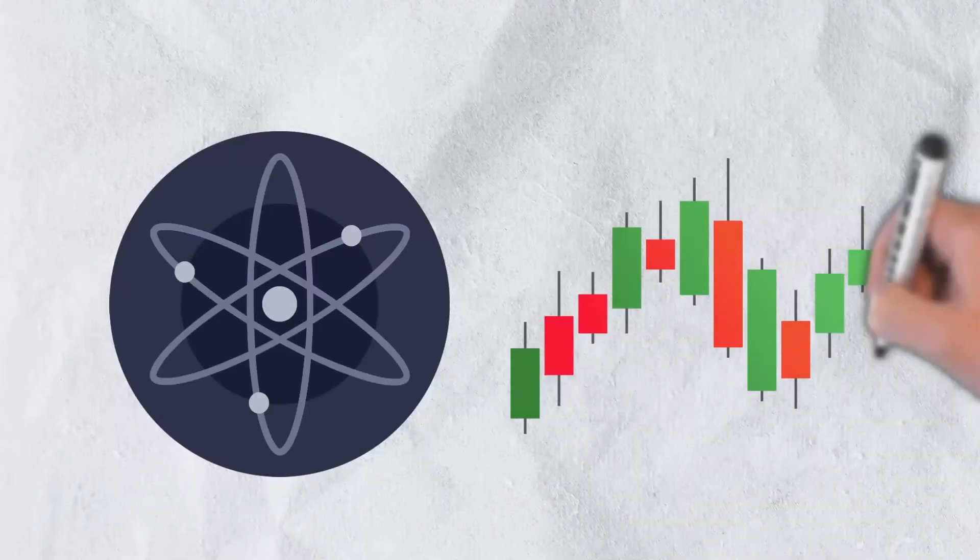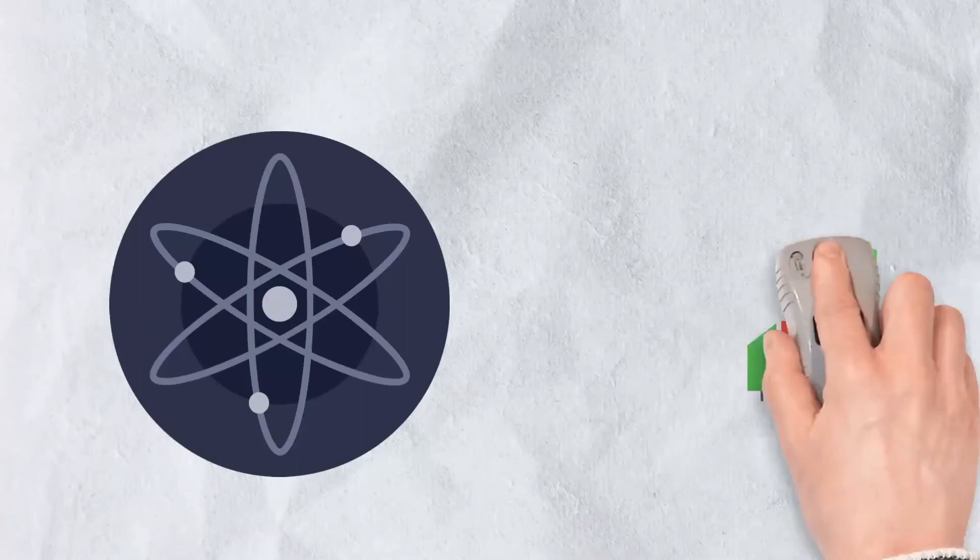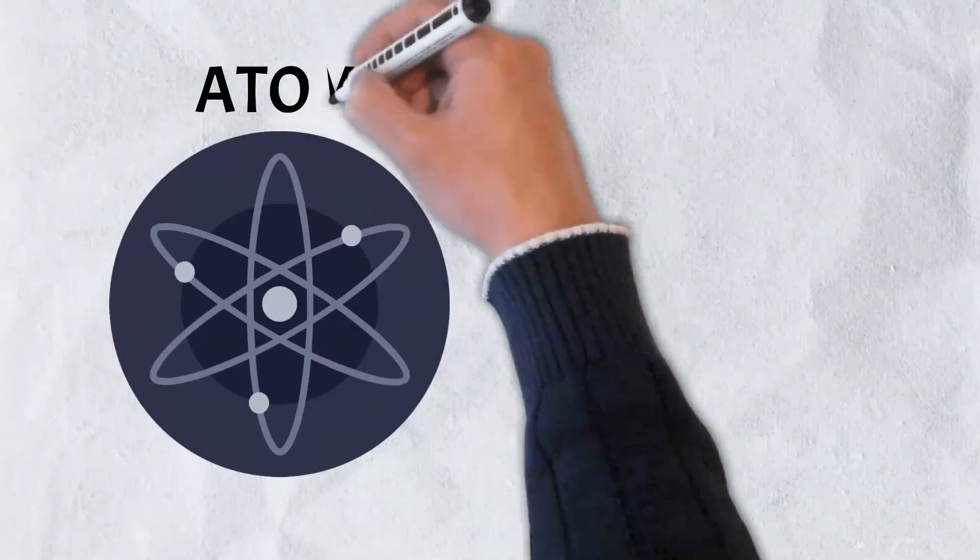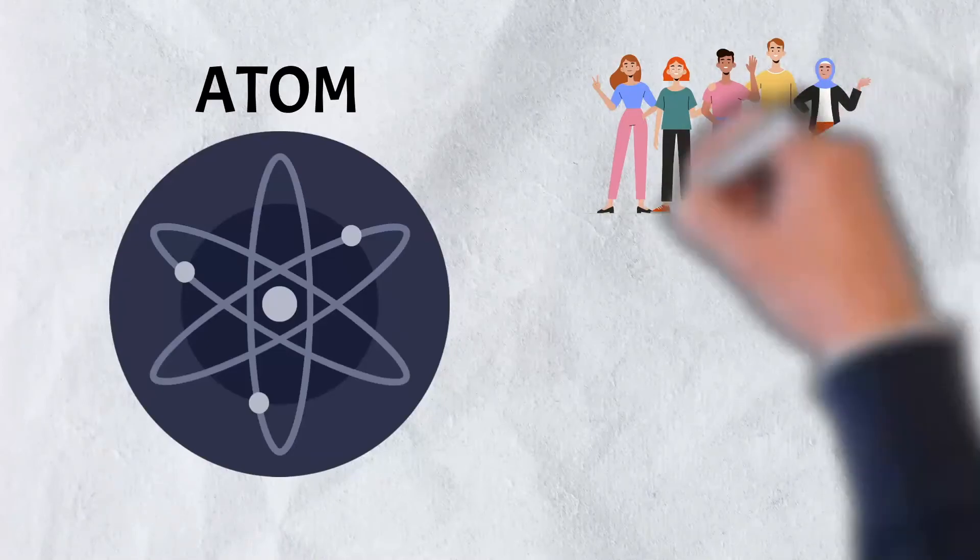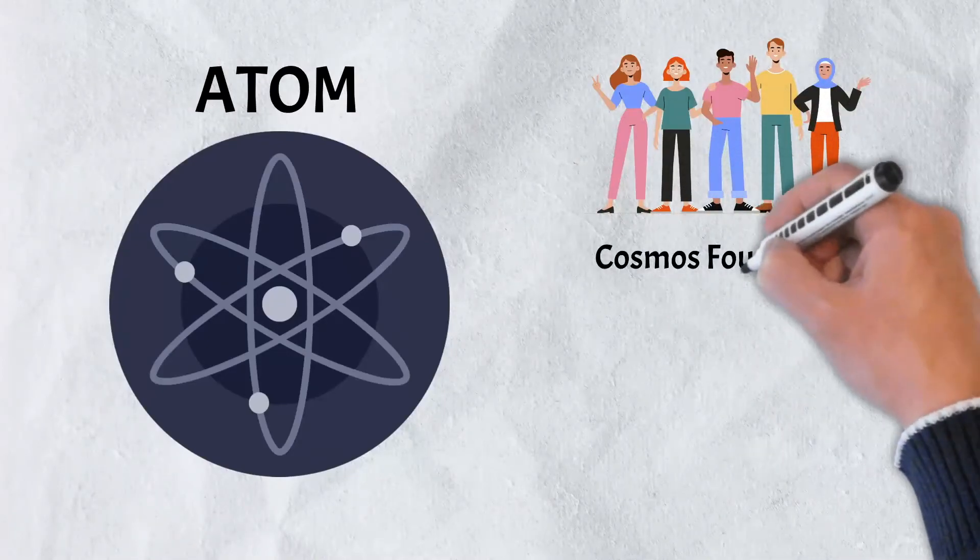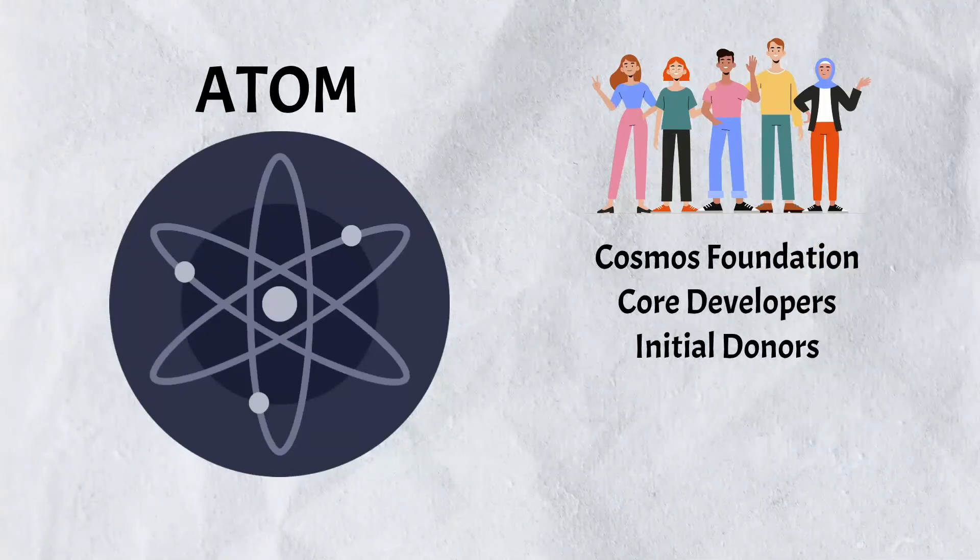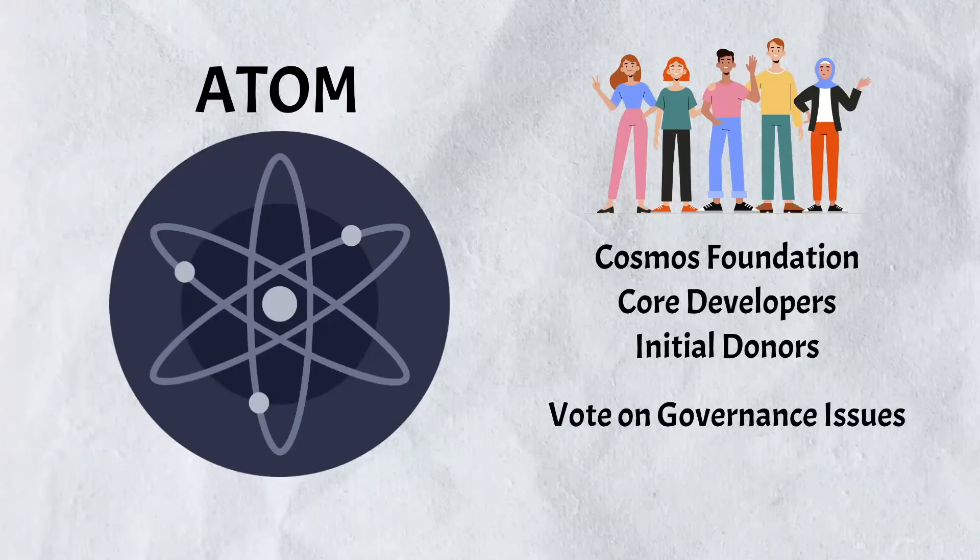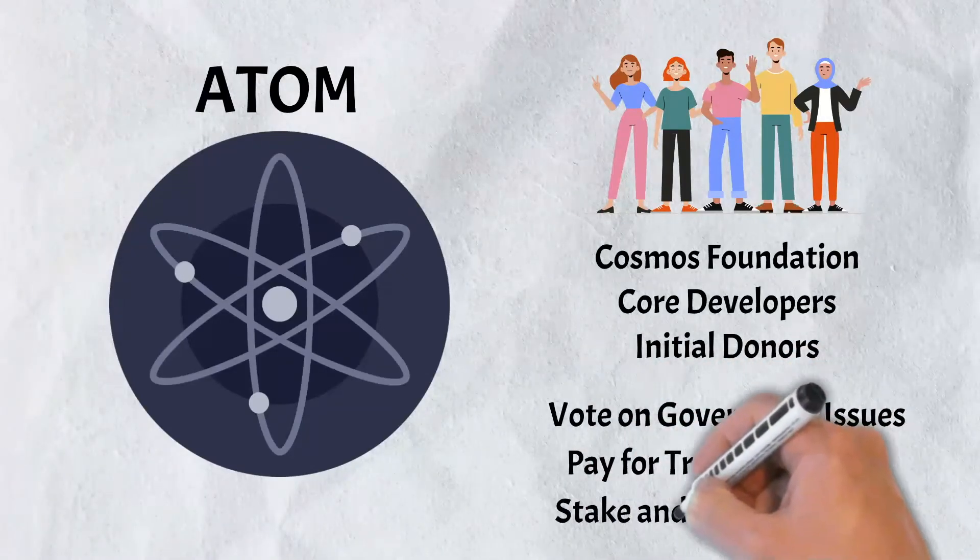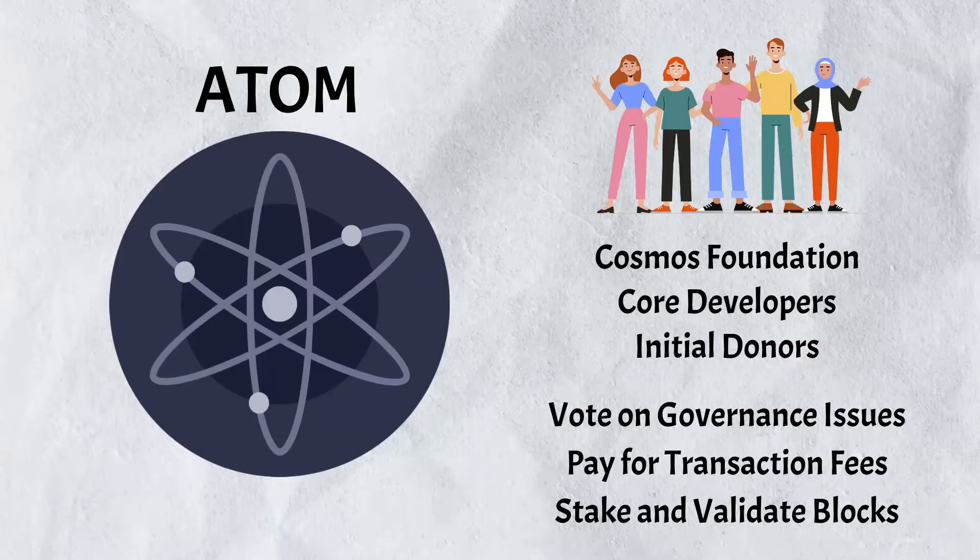If you're looking to invest, Atom is your token. The Cosmos ICO was held back in April of 2019. Initial Atom tokens were distributed to the Cosmos Foundation, core developers, and initial donors. Holding Atom gives the holder the ability to vote on governance issues, pay for transaction fees, and stake and validate blocks.